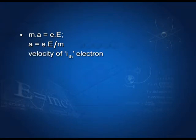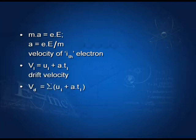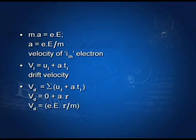So we get m into A equals e into E. Therefore, acceleration A equals eE divided by m. Velocity of the ith particle, using the first equation of motion, vi equals ui plus acceleration A into time t. So drift velocity equals summation of (ui + A·ti). Since summation of ui is zero, vD equals A into tau, where tau is the relaxation time. Substituting the value of acceleration, we get vD equals eEτ upon m.